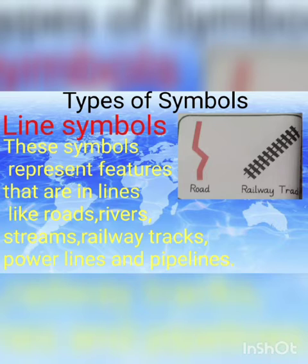The next symbol is line symbol. Line symbol کسی بھی کنٹری میں different roads, railway tracks, pipelines, power lines ہمیں شو کرواتا ہے map کے اوپر different symbols کے ساتھ۔ جس طرح آپ لوگ ویڈیو میں دیکھ سکتے ہیں کہ road کا کون سا symbol ہے اور railway track کا کون سا symbol ہے۔